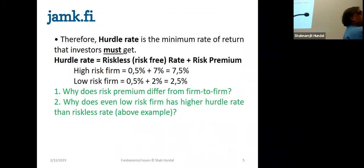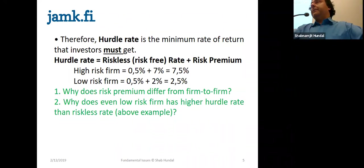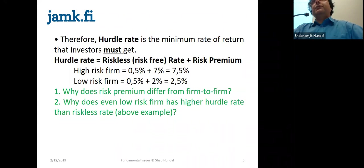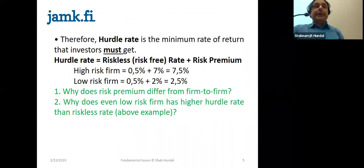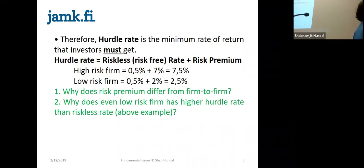There's an article I have uploaded in Optima called 'Triumph of the Optimist' — it's a very interesting article, you must go through it. I took a table from this article. Imagine somebody invested money in 1901 — one dollar. How much will it be in 2001? If you had invested one dollar in the treasury bill in America, you would have gotten on average 4% a year.